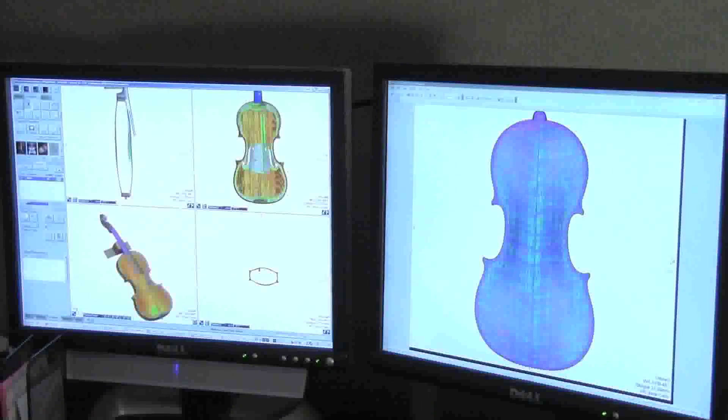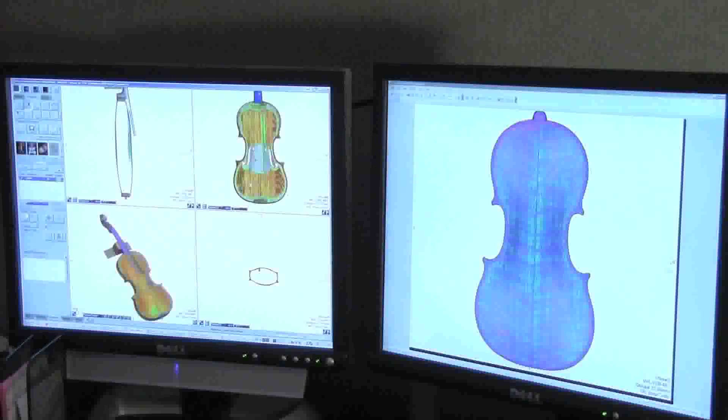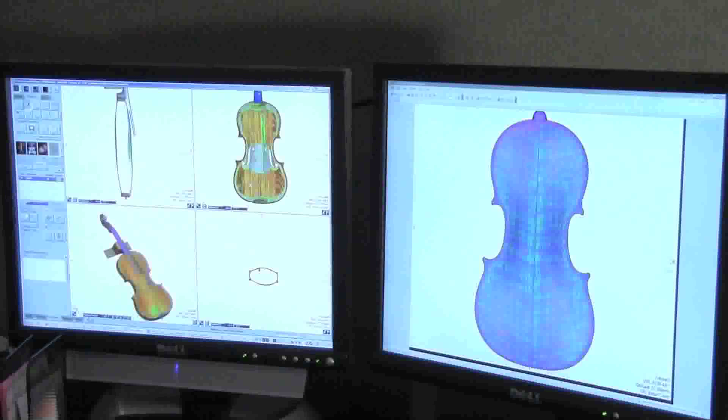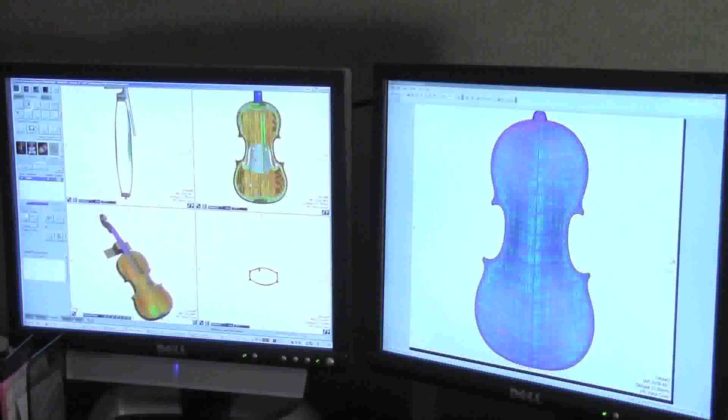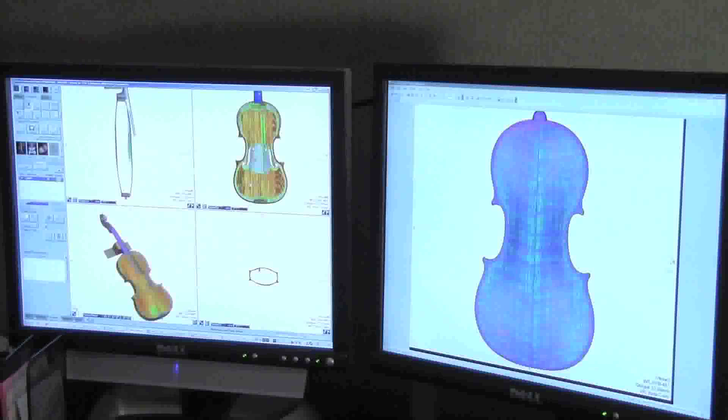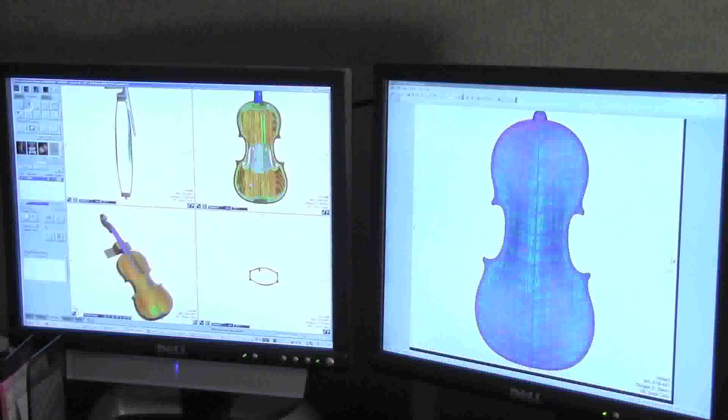What makes things different than scanning a human is obviously the densities of what we're scanning are very different. So in CAT scan talk, the numbers that are generated for each little piece of the violin are in the range of minus 500, and most of the human structures are going to be from zero up to maybe 500. So it's a totally different range.